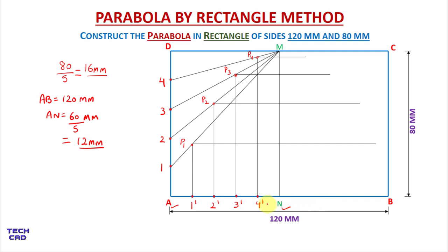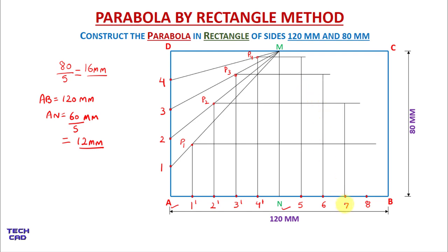Now divide your BN line into five equal divisions just as we divided AN. BN is also 60 mm, so we divide BN into five equal divisions. I will give namings: 5, 6, 7, and 8. From all these divisions I will take vertical lines — from 5 up to the P4 line, from 6 to the P3 line, from 7 to the P2 line, and from 8 to the P1 line. These are the parabola points for the right side of the rectangle.